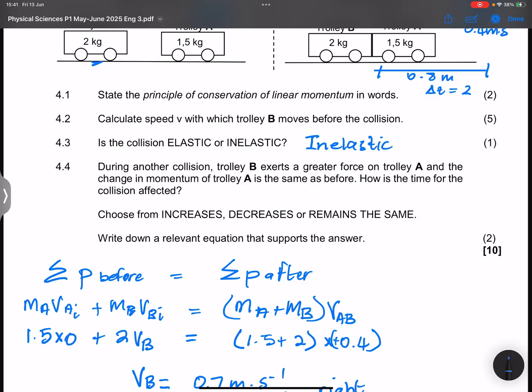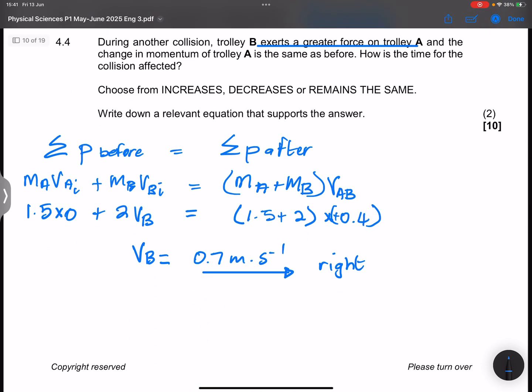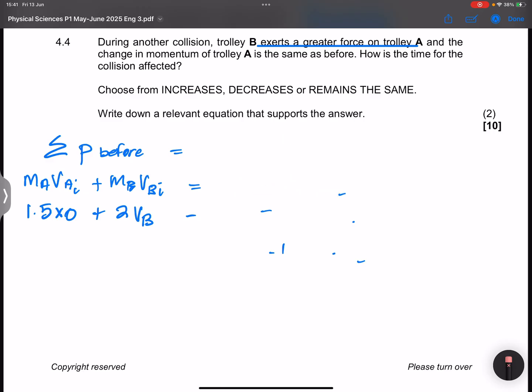Kinetic energy is not conserved. They say during another collision, trolley B exerts a greater force on trolley A, and the change in momentum is the same as before. How is the time for the collision affected? To answer this question, we'd have to look at the impulse momentum equation. Remember what it says: F net multiplied by the change in time equals change in momentum. We are trying to find out what will happen to the time.